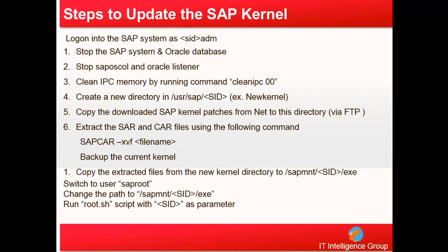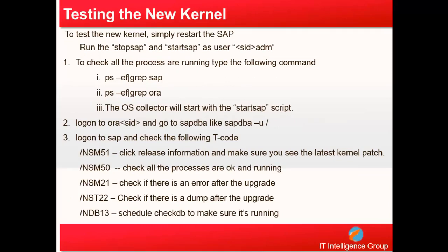The following steps are for a Unix system, but a Windows system is exactly the same — only the folder names change. First, log in as the <SID>adm user, stop SAP, stop Oracle, stop OS Collectors, stop Oracle Listener. Then run Clean IPC with your system number — for example, Clean IPC 01 — to ensure IPC shared memory, messages, and semaphores are cleared. Then create a new directory, copy the downloaded kernels there, extract the files, switch to the new kernel, and run root.sh to set all permissions correctly.